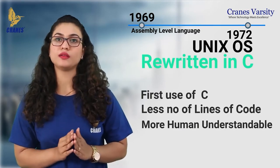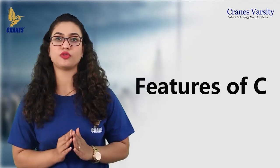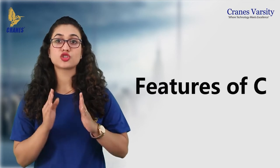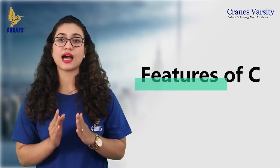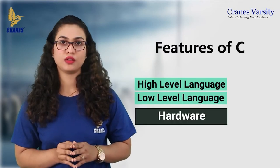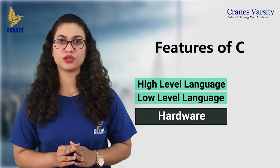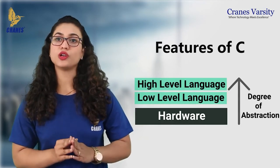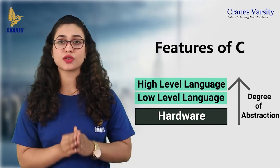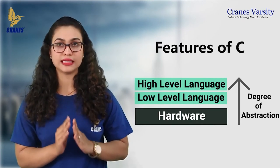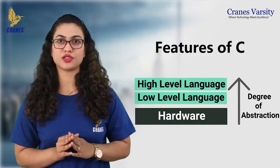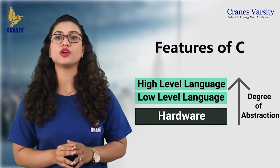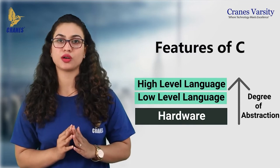Let us quickly see the important features of C programming language. The first thing is high level language and low level language. These two point to the degree of abstraction. Degree of abstraction means you are hiding the system level details. High degree of abstraction means less effort to the user, that is more friendliness, where you don't require to know in detail about the internal parts of your computer.